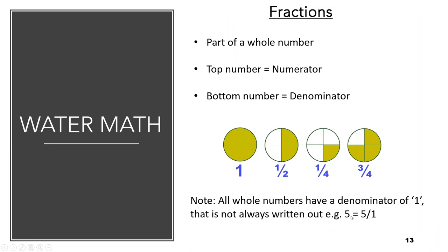Fractions are part of a whole number. In fractions we have the top number, which is the numerator, and the bottom number, which is the denominator. All whole numbers have a denominator of one that is not always written out — for example, the number 5 can be written as 5 over 1. One out of two is a half, one out of four is a quarter, and so forth. A whole number is simply one.